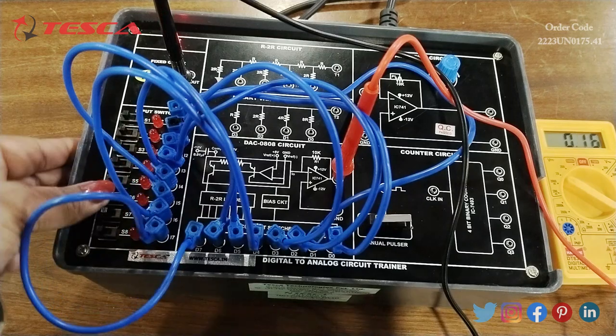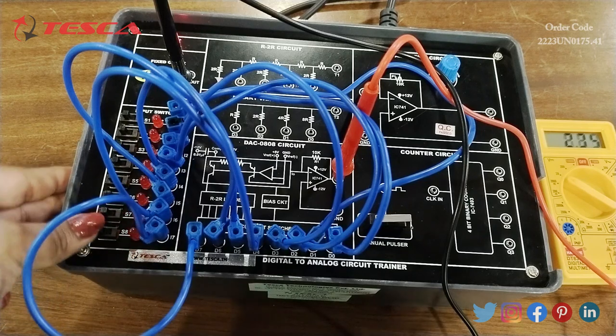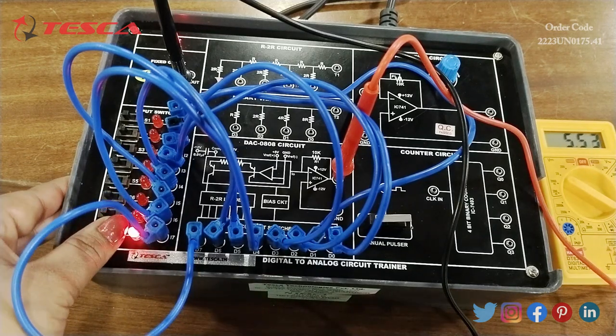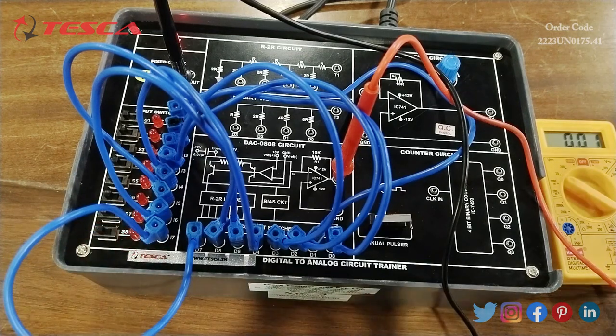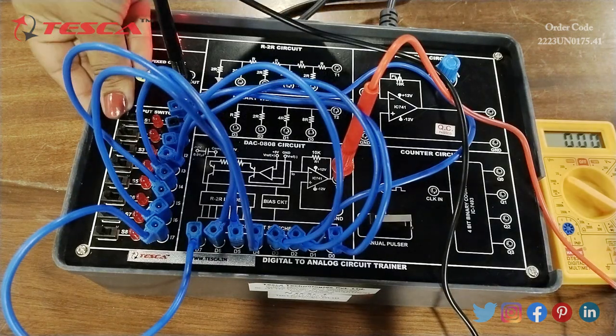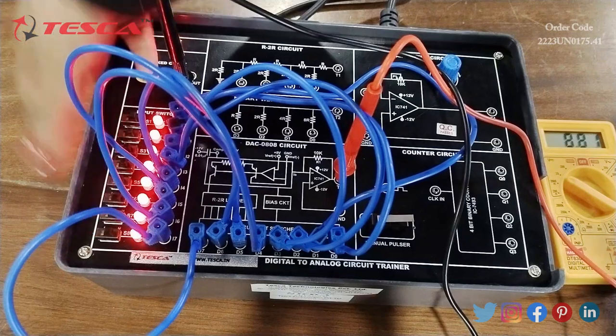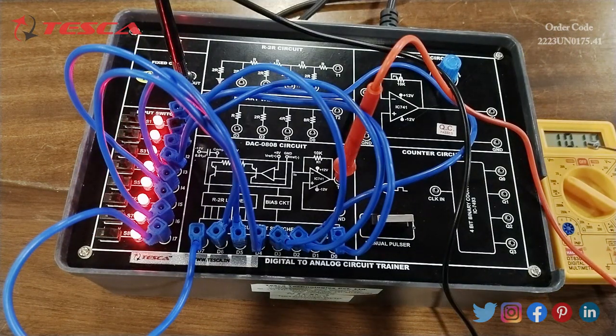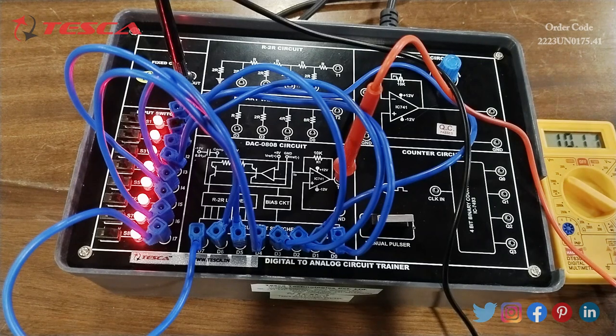You can see in the multimeter, at the last I get the value of voltage approaching 5.53. Now by turning off all the switches, I can take the value of voltage which is approximately 0.210.